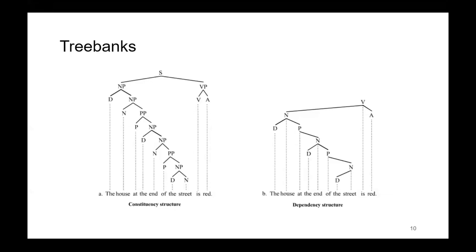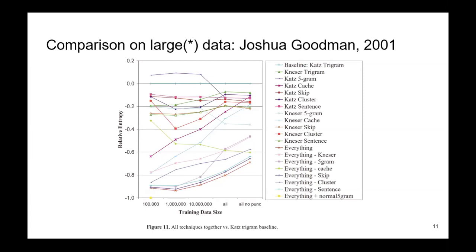There was this very insightful technical report from Joshua Goodman, who took many of these ideas and evaluated pretty much all of them that he could implement easily, and combined them together to see which ones are redundant and which are actually necessary. He ended up concluding that the cache and clustering ideas are the very important ones.